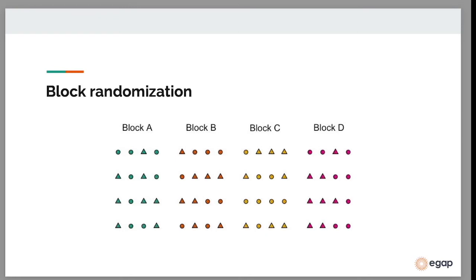The benefit of block randomization is that we get balance across treatment and control groups in the number of individuals from each block. You can think about this as having equal numbers of A, B, C, and D group members that are triangles and that are circles. And as we mentioned before, the blocks don't have to be the same size.